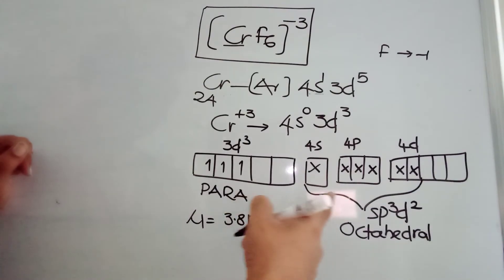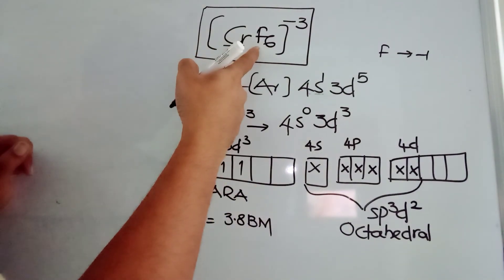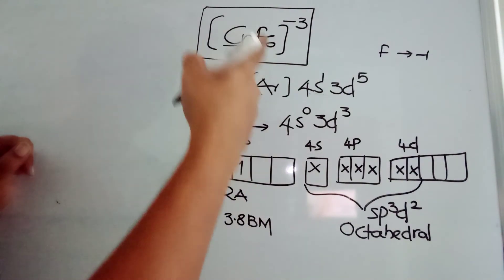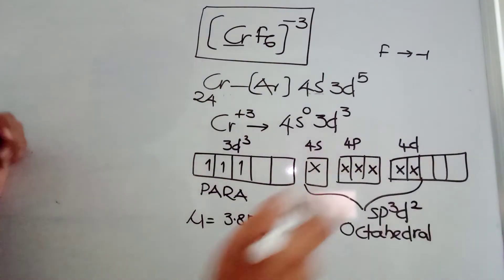There are SP3D2 hybrid orbitals, so octahedral geometry. Fluoride is there, it is a weak-field ligand. Because of the weak-field ligand, outer orbitals are joining.